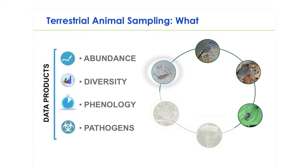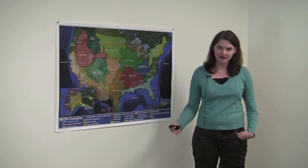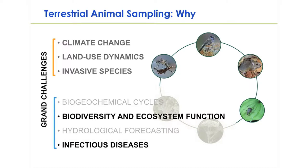These taxa include ticks and mosquitoes, breeding land birds, small mammals, and ground beetles. These data are of particular significance to the grand challenges related to our drivers and their responses, namely biodiversity and ecosystem function and infectious diseases. But why do we care about these challenges in the context of animal ecology?